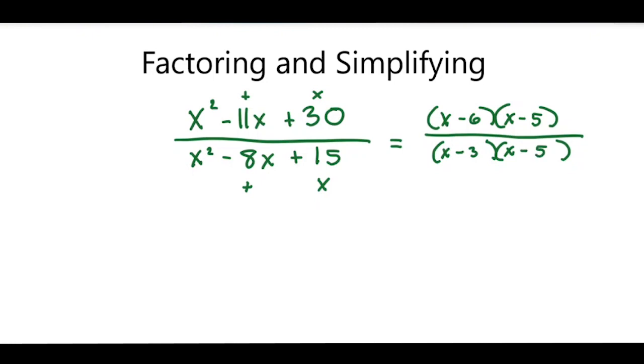So right away, I see that on top I have an x minus 5, and on the bottom is an x minus 5. So that means I am left with x minus 6 on the top and x minus 3 on the bottom. And those are not the same, so they cannot cancel. And that is my final answer, x minus 6 over x minus 3.